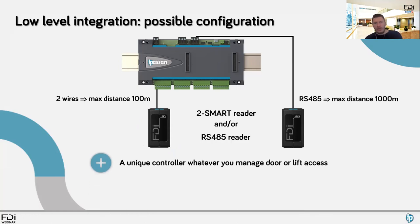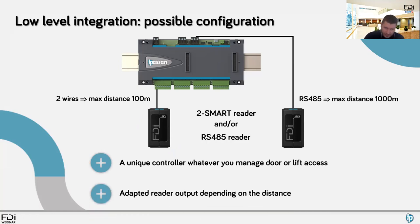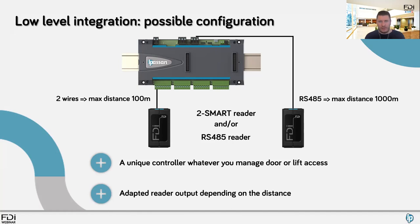It's a unique controller regardless of whether you're managing a door or lift access — no additional license activation is required in the software. One unique controller, one stock item. You can manage up to six readers, choosing between Two Smart Readers or RS485 readers. This is what we call low-level integration. Now let's move to high-level integration with different lift brands.